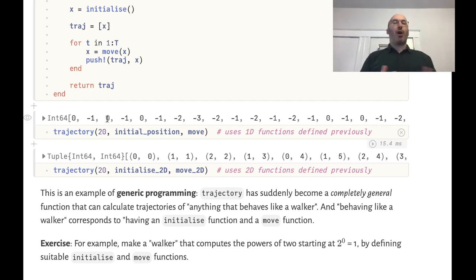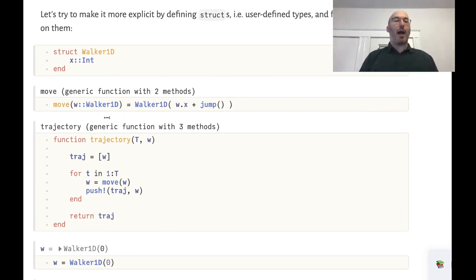We want to define a new struct, a new user defined type which represents a one-dimensional walker and another one that is a two-dimensional walker. We've already seen how to use types. So let's define a struct called Walker1d which contains the position of that walker and then we'll just define move to accept an object of that type.